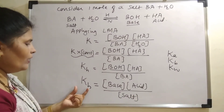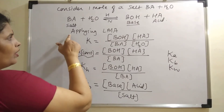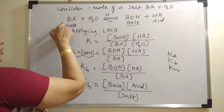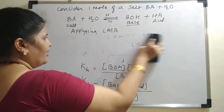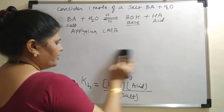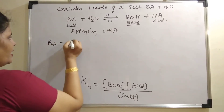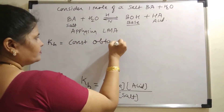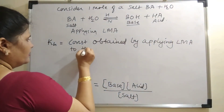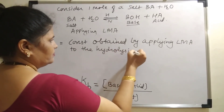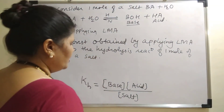The actual definition of the hydrolysis constant: we are creating the definition on the basis of the formula. The hydrolysis constant can be defined as a constant obtained by applying the law of mass action to the hydrolysis reaction of one mole of a salt. This is about the hydrolysis constant. Thank you, students.